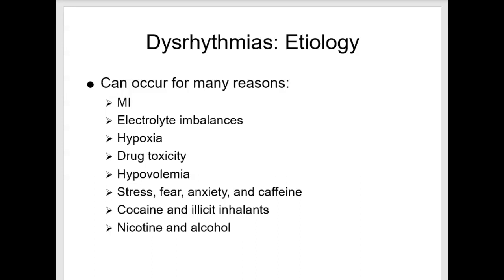Dysrhythmias may also be classified by their site of origin in the heart, including common sinus, atrial, or ventricular dysrhythmias. Assess the patient's apical and radial pulses for a full minute for any irregularity, which may occur with premature beats or AFib. If the apical pulse differs from the radial pulse rate, a pulse deficit exists and indicates that the heart is not pumping adequately to achieve optimal perfusion to the body.